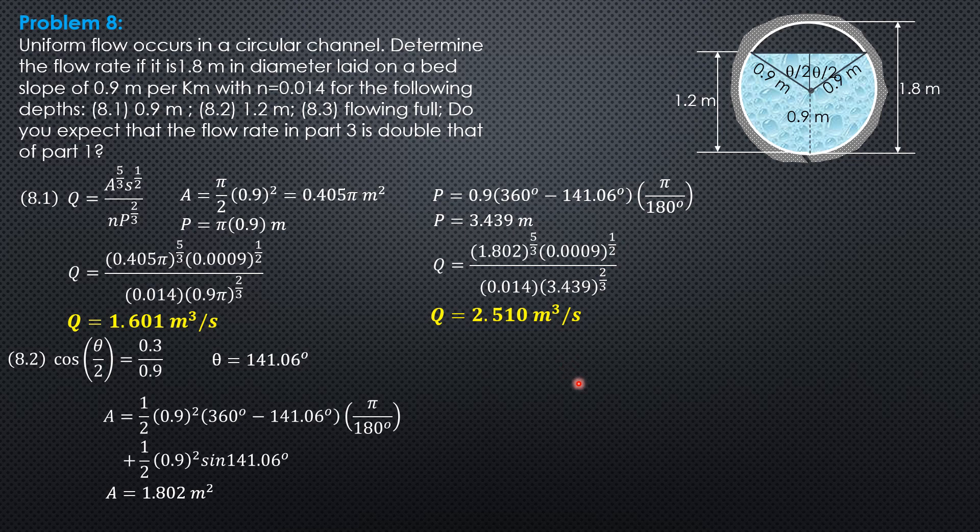Then for number 3, if it is full, then the area is pi r squared. Pi 0.9 squared, 0.81 pi.